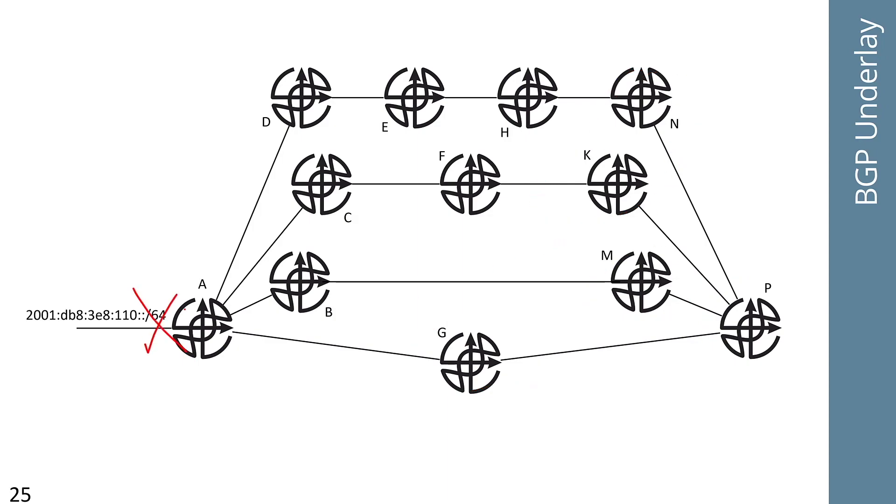So let's say that this link between A and 110 colon colon slash 64 falls off the network, fails. So this particular destination just falls off the network. At T1, A is going to advertise a withdraw to G, B, C, and D, right? So this is my T1. Now G, B, C, and D are going to recalculate their best path in BGP and at T2, G is going to advertise a withdraw to P, B is going to advertise a withdraw to M, C is going to advertise a withdraw to F, and D is going to advertise a withdraw to E, right? Now P is going to receive the withdraw from G and say, what do I do about this? I've lost my best path. So it's going to flip to its next best path, which is going to be through M because that's the next shortest AS path.